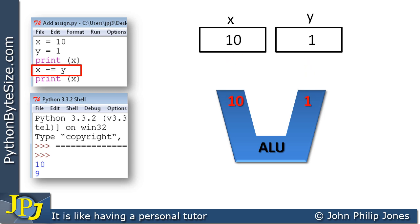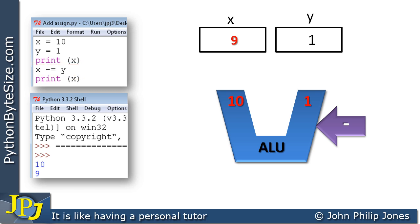The inputs to the arithmetic and logic unit are derived from the variables — a copy is transferred from X and Y. The subtraction will give us a 9 at the output, and then this 9 is assigned to X. So what we have just seen is a subtraction followed by an assignment. The next line, print X, will output to the screen that the value is 9, which is what we would expect because X now has the value of 9.